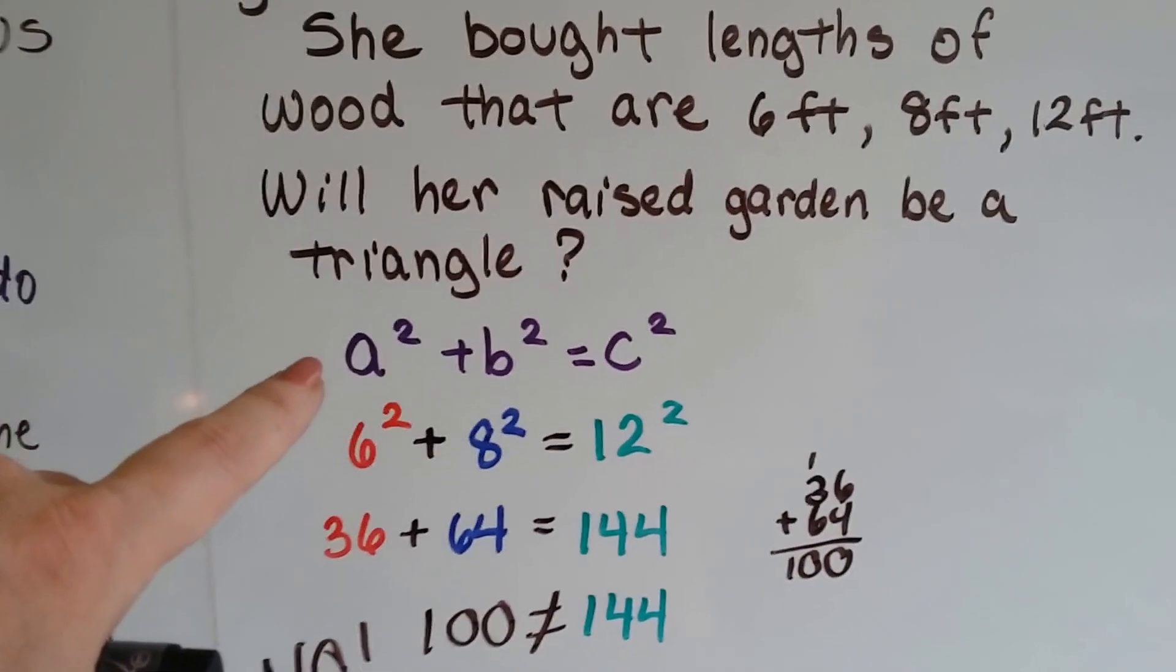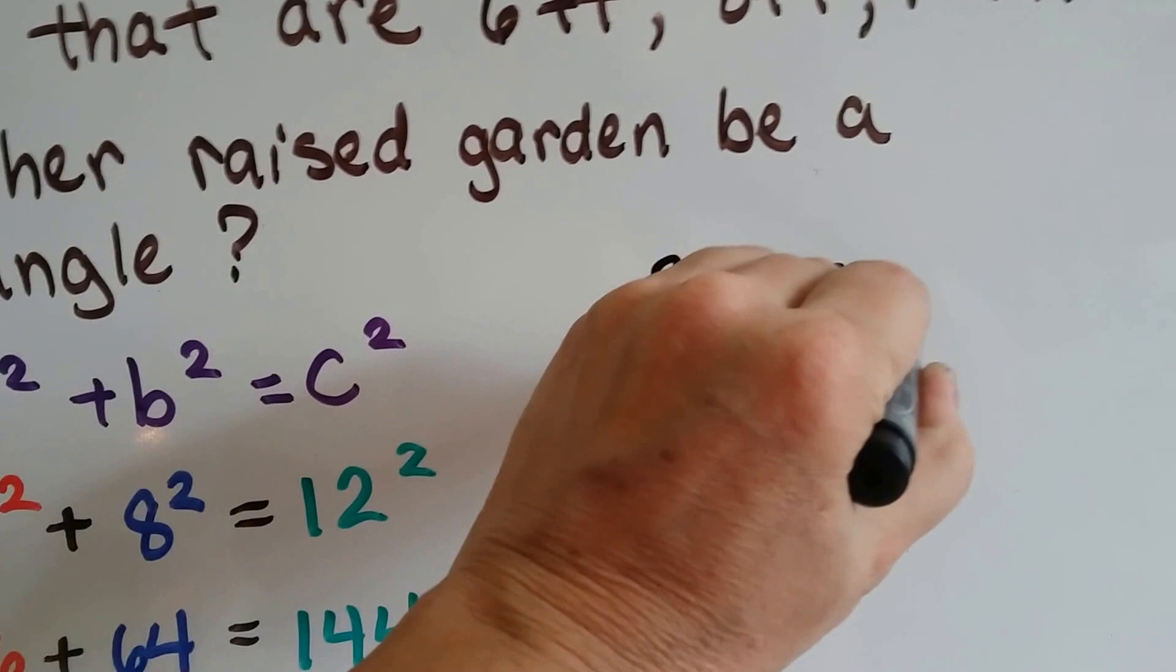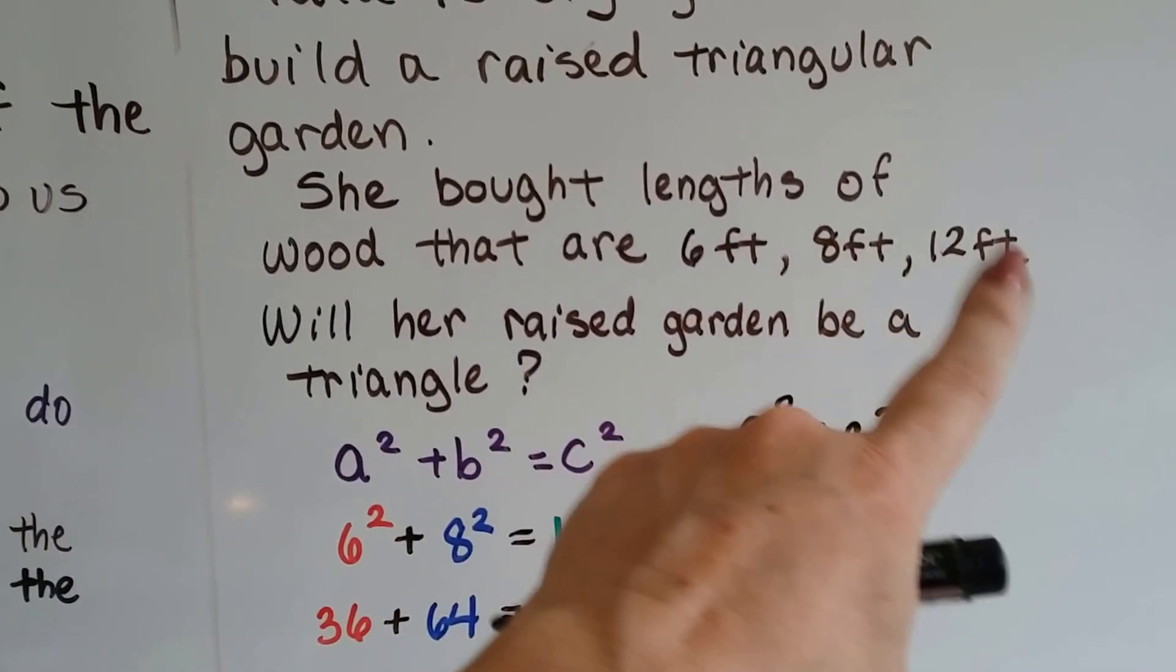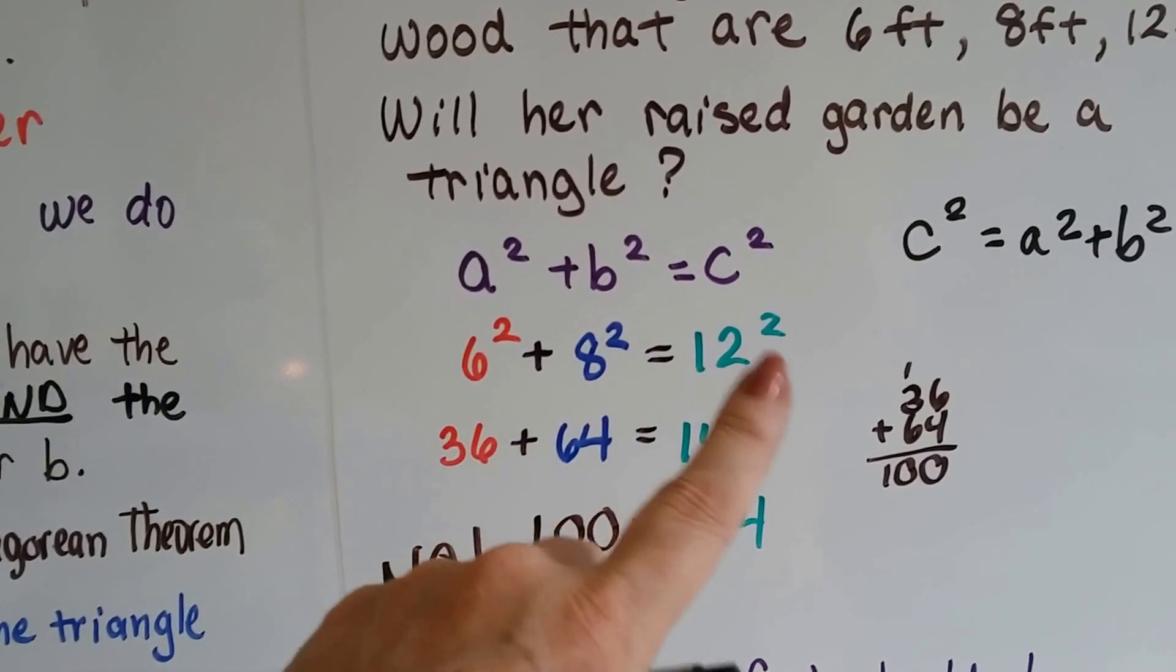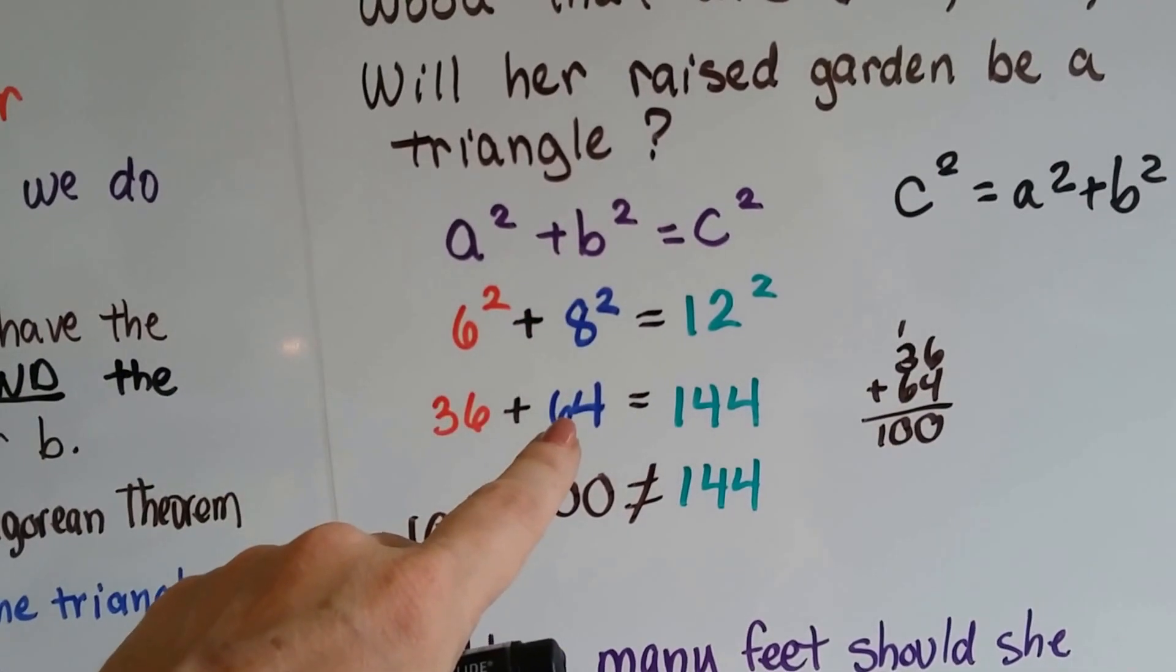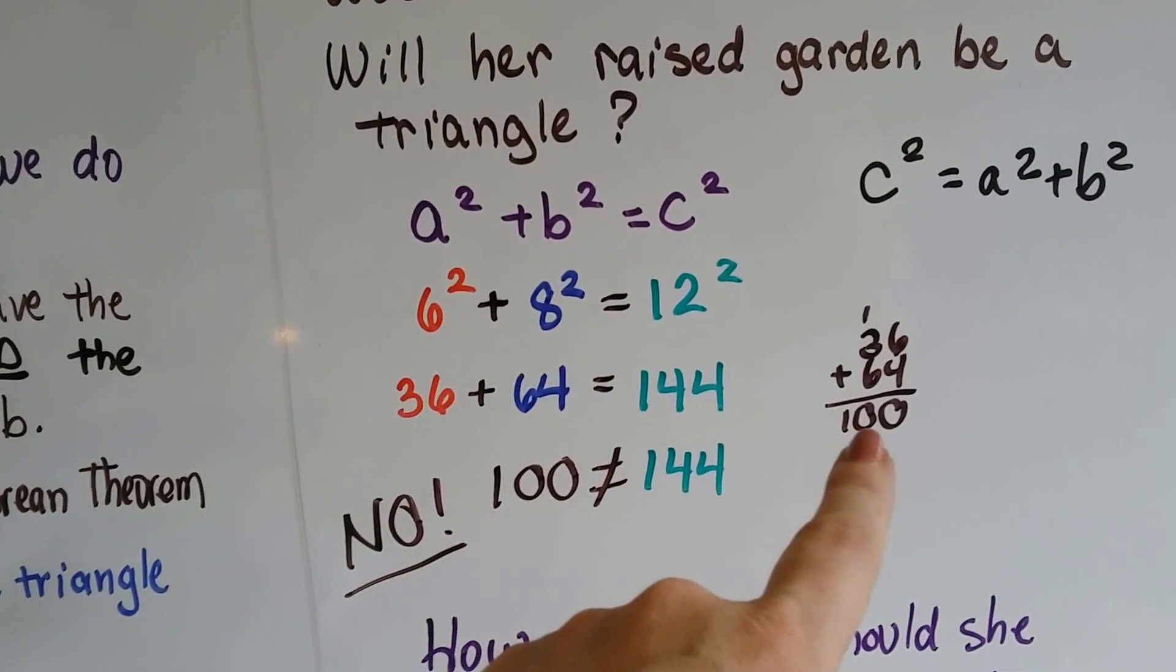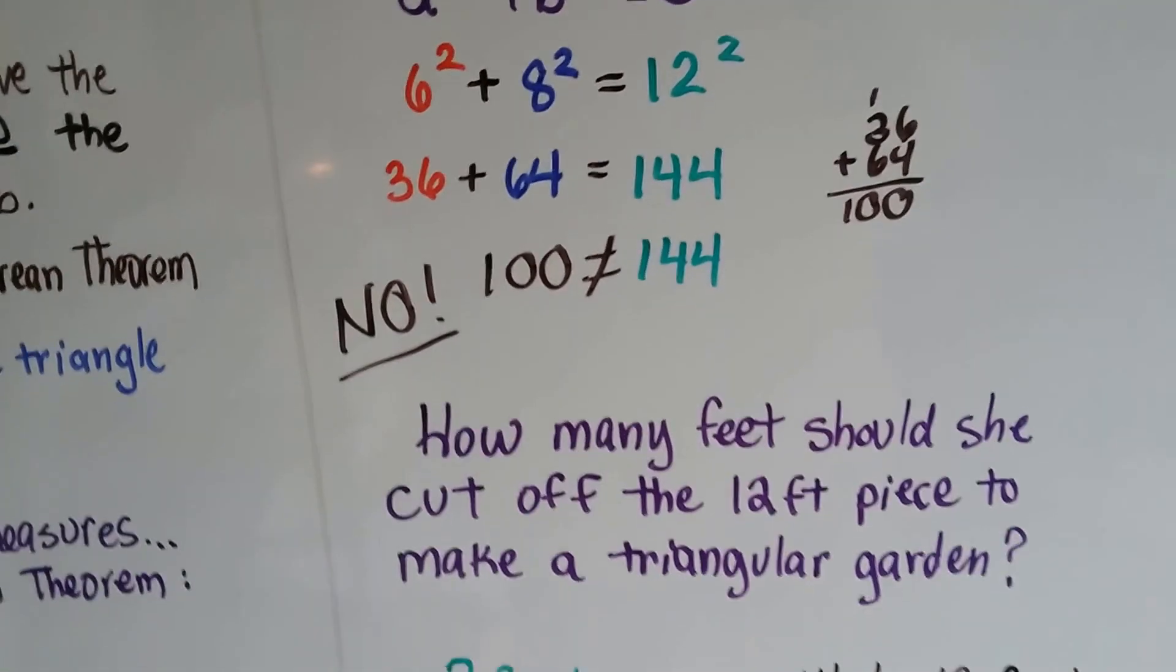Using c squared equals a squared plus b squared, we've got 6, 8, and 12 for our lengths, and the 12, the longest one, is always c squared. So we've got 6 squared plus 8 squared equals 12 squared. Well, 6 times 6 is 36 and 8 times 8 is 64, but 12 times 12 is 144. If you add these up, 36 and 64 equals 100, and 100 does not equal 144. So no, it's not going to be a right triangle.